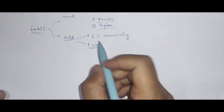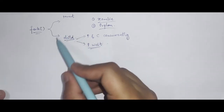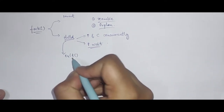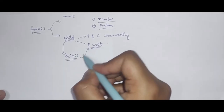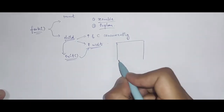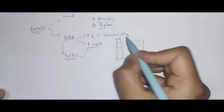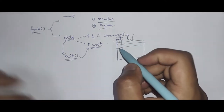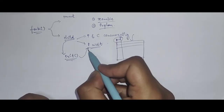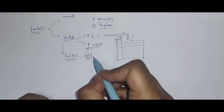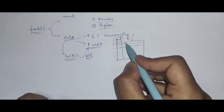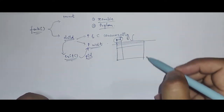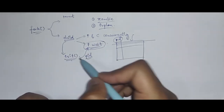Assuming the parent waits for the child, the child will continue its execution and eventually call exit. Once the child calls exit, its exit status will be returned to the parent. The parent catches the status, gets the process ID of the child, and then removes all the traces of that child from the process table. It is the parent's job to do this cleanup.